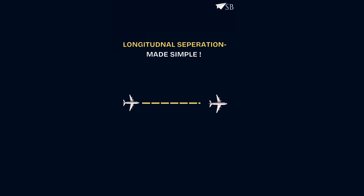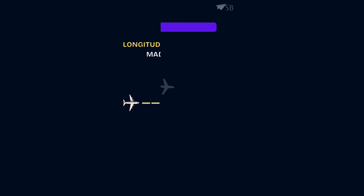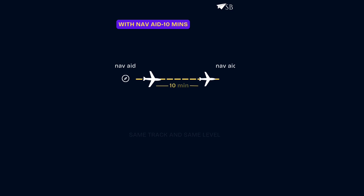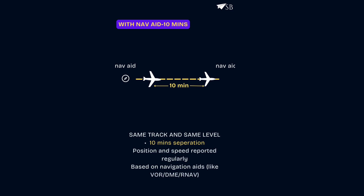Now let's look into longitudinal separation. The standard separation for same level is 15 minutes between aircraft. With NAV aids giving frequent position updates, this is reduced to 10 minutes.